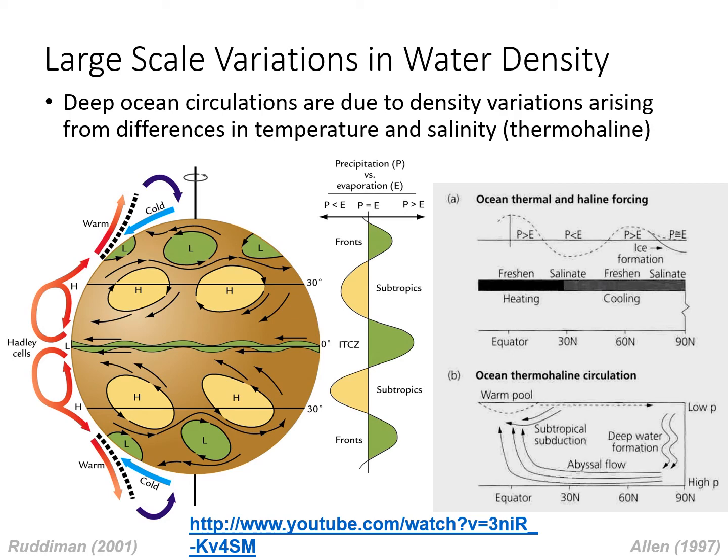Salinity is lowest at the equator. As water moves north, it cools and salinity increases with evaporation. Near the poles, ice formation, which expels salt, causes salinity to increase further and water becomes so dense it sinks. This is referred to as deep water formation and is shown on the bottom right panel.